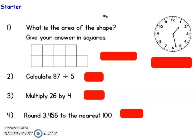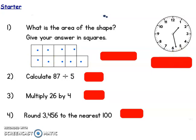Let's have a look. Are you ready to go through the answers? Get yourself a blue pen if you've got one — if not, you're fine to use a pencil. Number one says: what is the area of the shape? Give your answer in squares. So you needed to count the squares: one, two, three, four, five, six, seven, eight, nine. The area was nine squares. Give yourself a tick if you got that right.